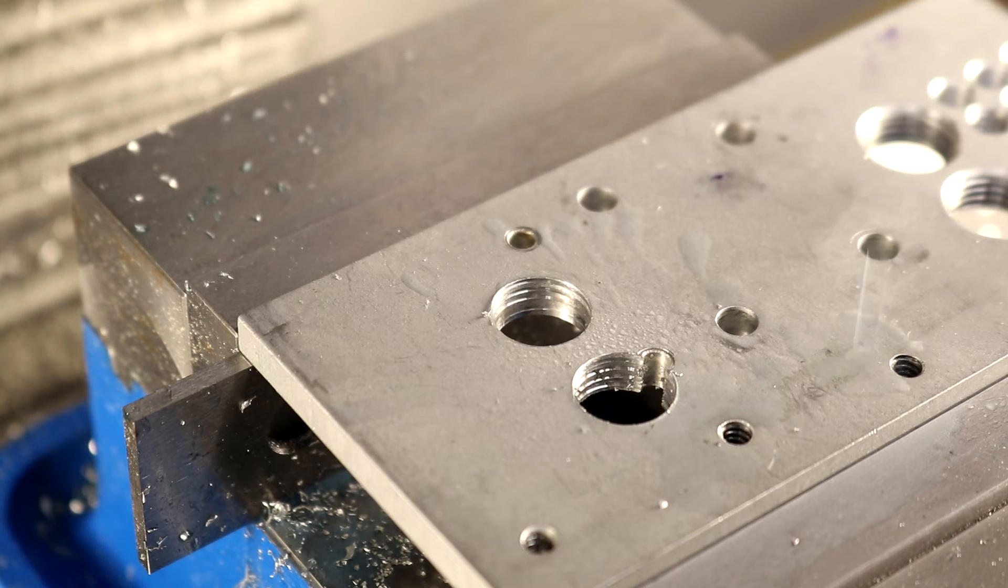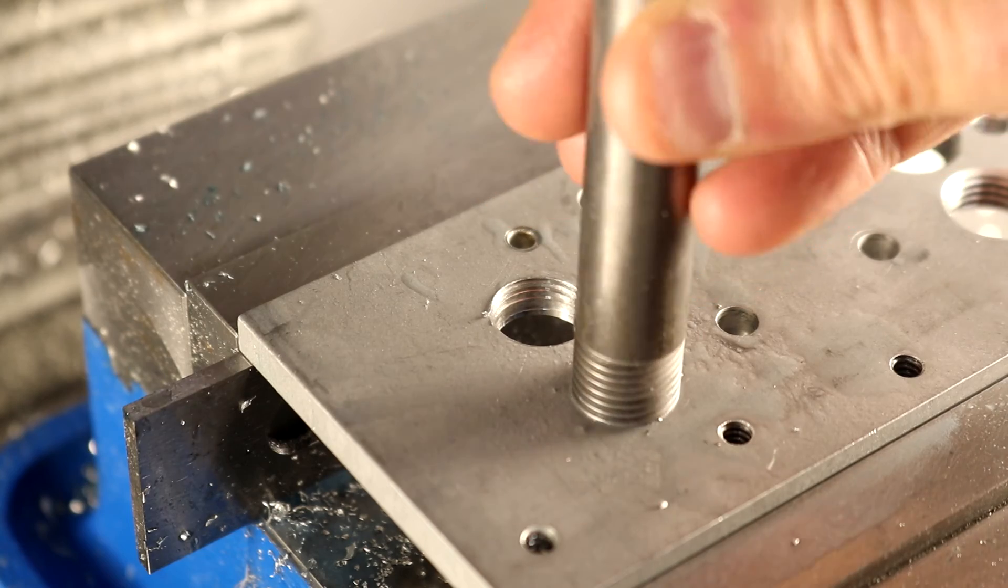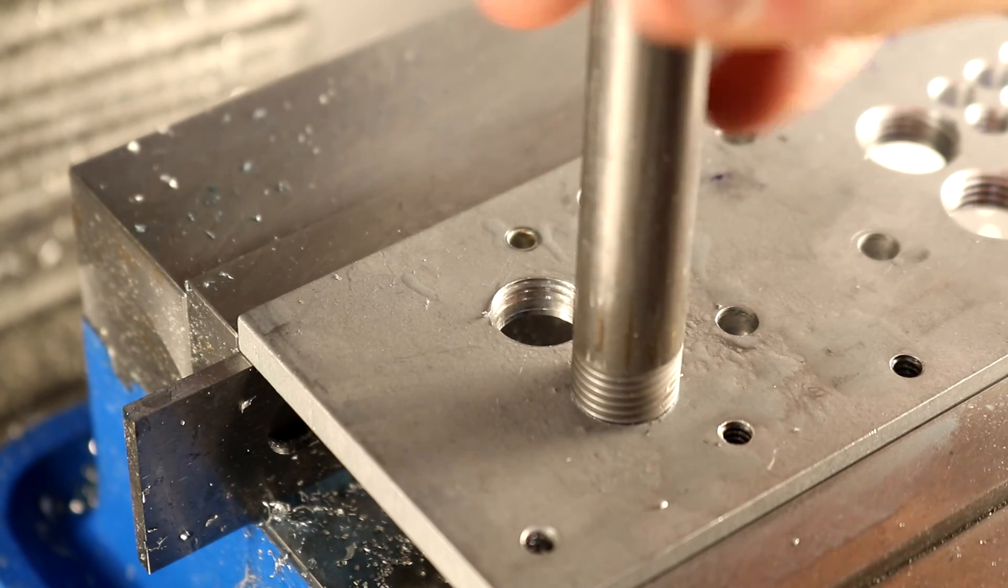I forgot the chamfer on these holes, but I hope otherwise this demo was clear. Okay, recapping, we looked at adding a spindle encoder to a CNC conversion of a PM25 milling machine.